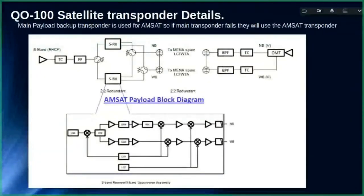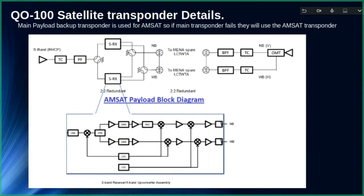The satellite was originally built for TV transmissions in the Qatar and North Africa area. It has a primary and a secondary transponder — normally the secondary would be on standby in case the primary fails. What AMSAT-DL has done is enable the secondary transponder for amateur use, modified to operate in the amateur bands. The primary one is operating commercially and the secondary one is what we use, so it's very important we don't misuse it — if we do, they will probably disable it.